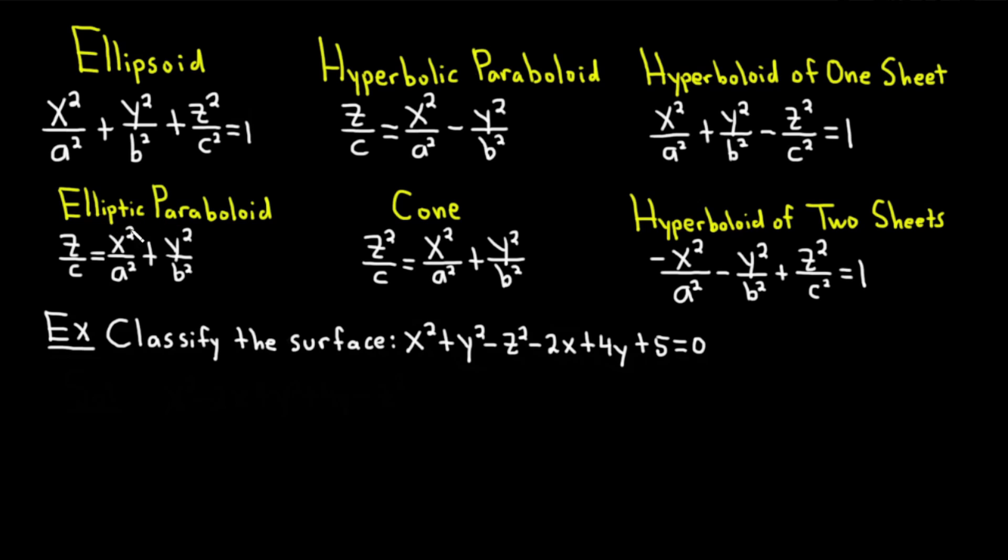Then we have the elliptic paraboloid. It's z over c equals x squared over a squared plus y squared over b squared.